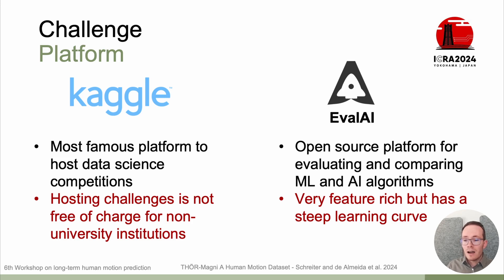Then there is EvalAI, an open source platform for evaluating and comparing machine learning and artificial intelligence algorithms. It is very feature-rich, it is free to use, and provides a live leaderboard, but it has a steep learning curve for developers creating challenges. In contrast to Kaggle, EvalAI has a rather small team of developers behind it, which is why it can sometimes take a bit longer for them to respond to issues, as we have noticed.